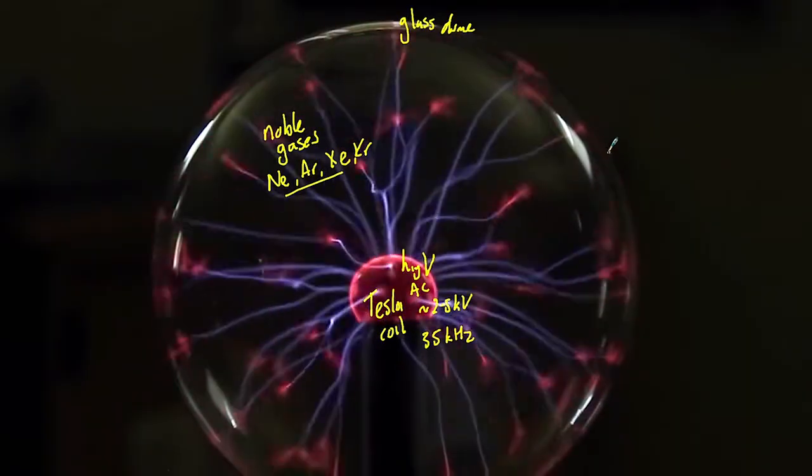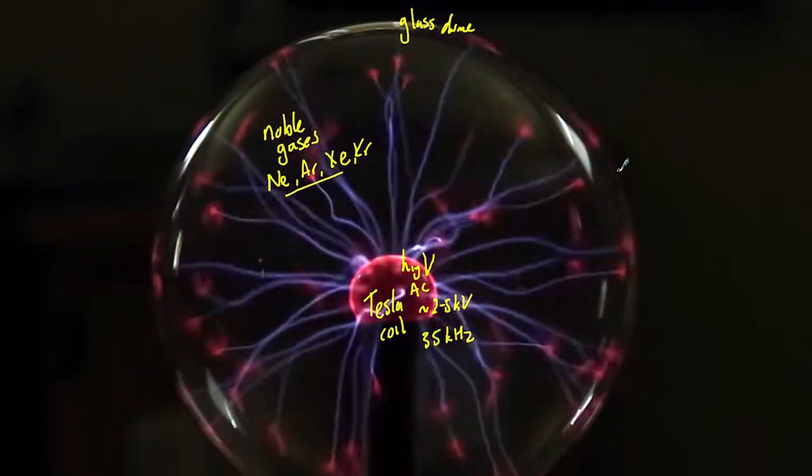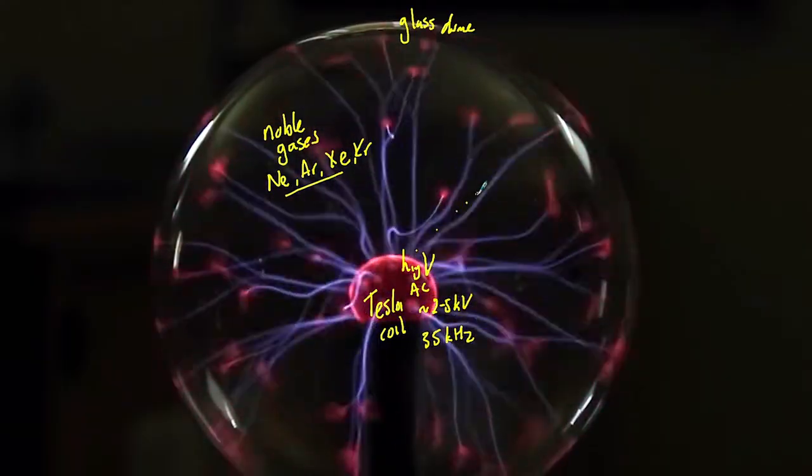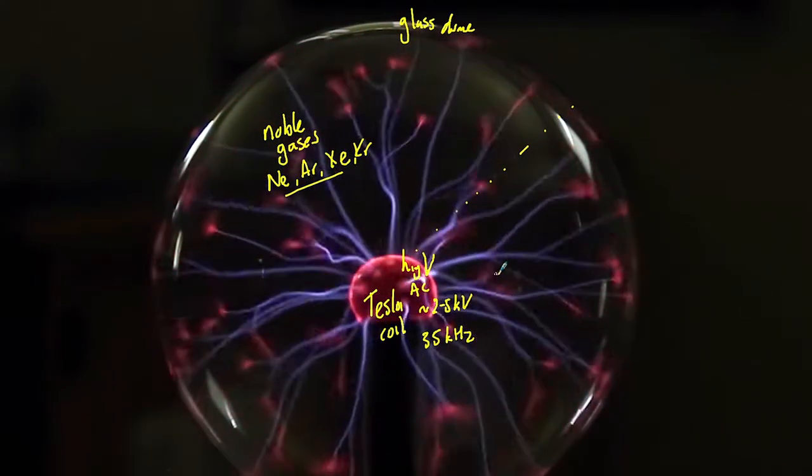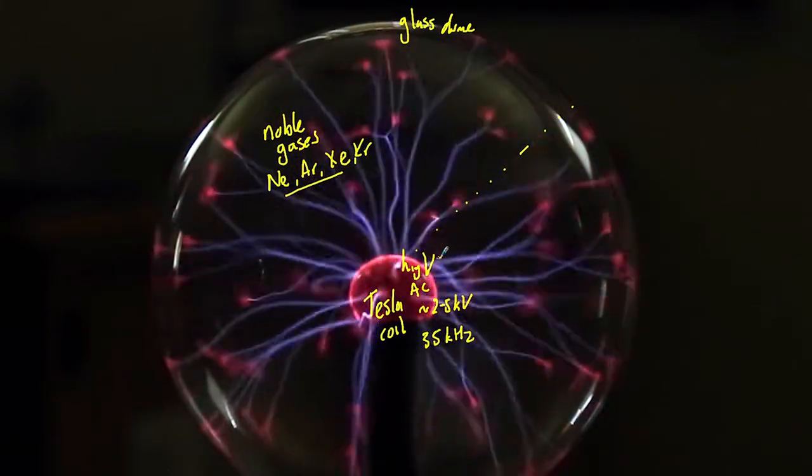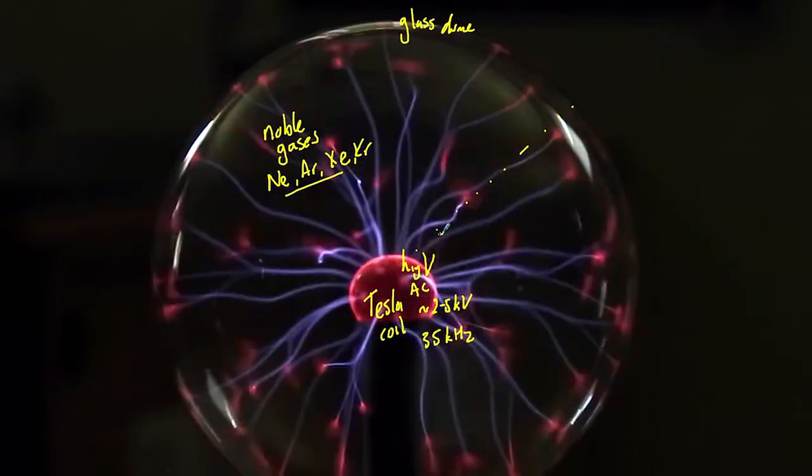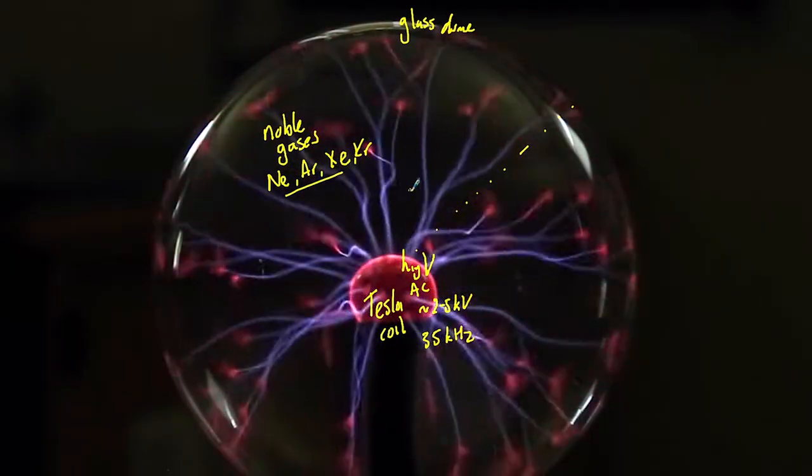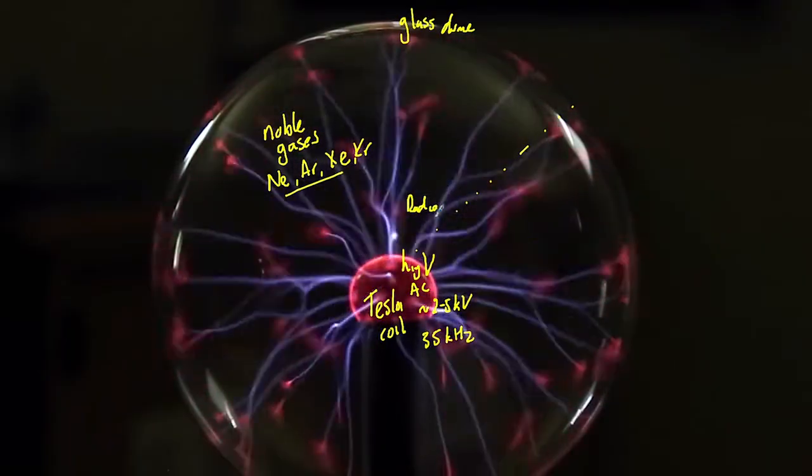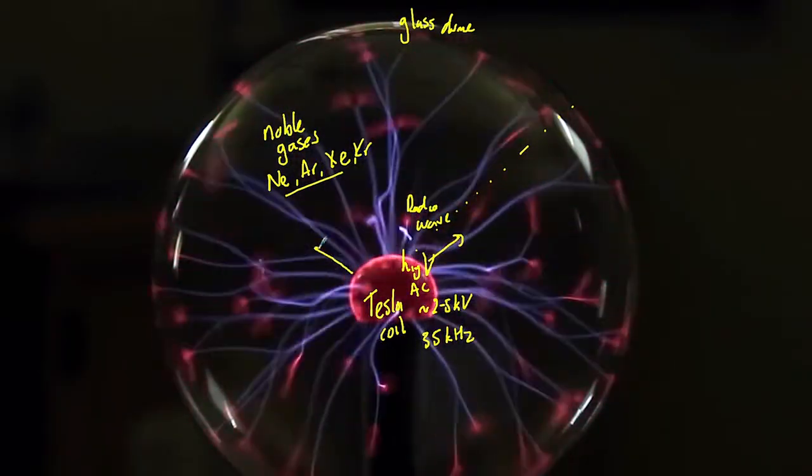And of course at the edges, the potential is going to be significantly lower. So we're going to get a potential difference between the inner dome and the outer dome. Now what that does is it produces a radio frequency electromagnetic wave. So in essence, basically we have a radio wave emanating out from the Tesla coil.